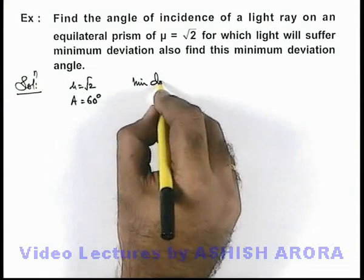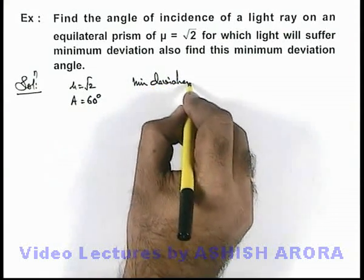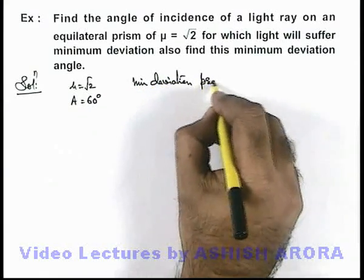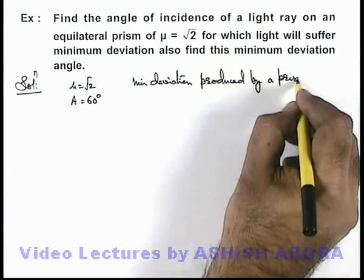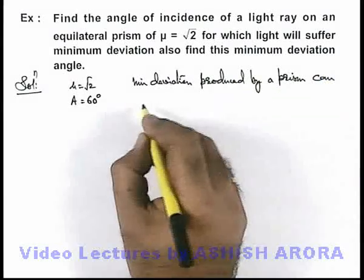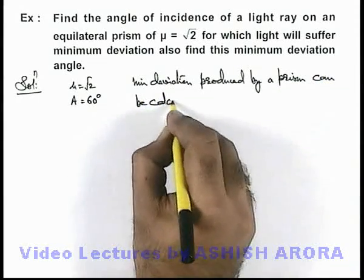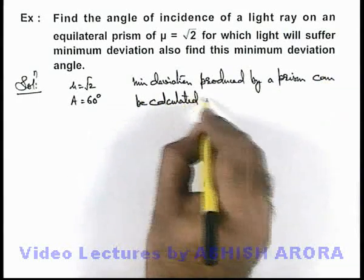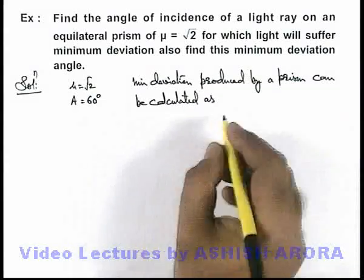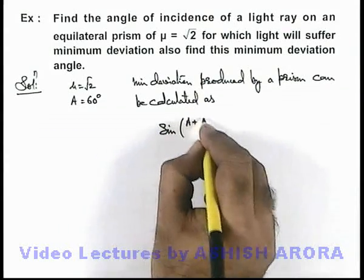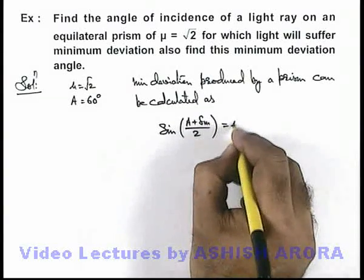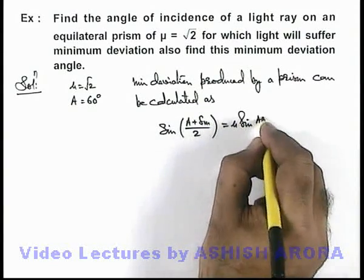Here we can write, minimum deviation produced by prism can be calculated as: the relation we have already studied is sine of A plus delta minimum by 2, is equal to mu sine of A by 2.